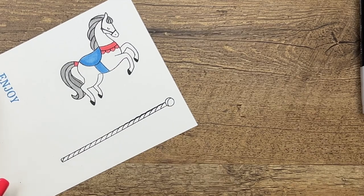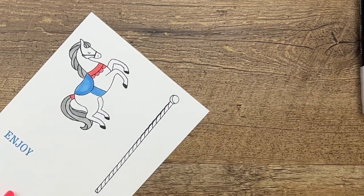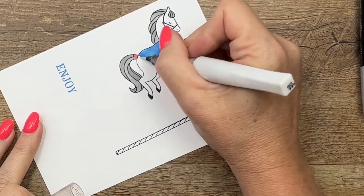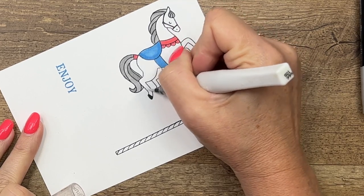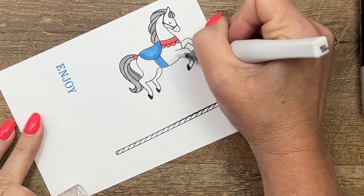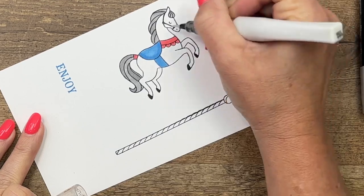Okay, now I'm going to take Wink of Stella and I'm going to add Wink of Stella, which is just a clear glitter brush, all over the remaining white parts of my horse to give her a little bit of shimmer.